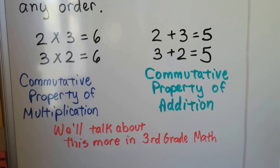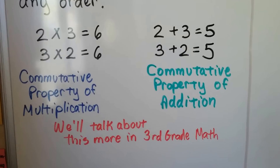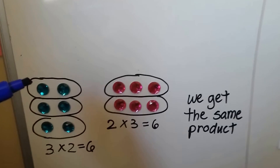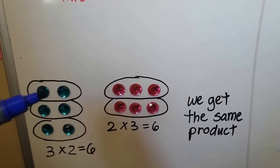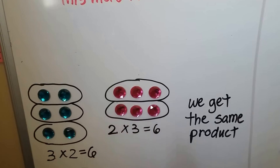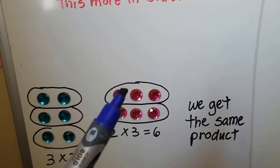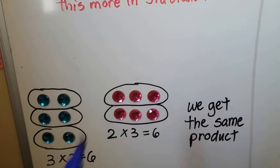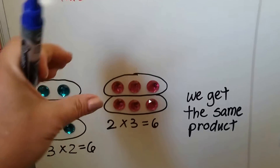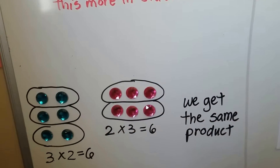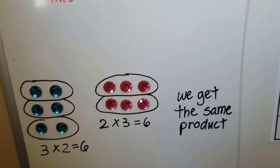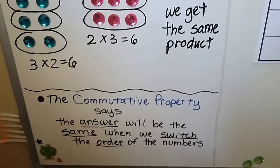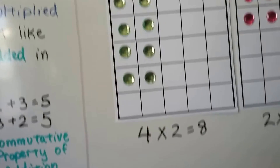I'm going to talk more about this in third grade math, so don't worry too much about it — I just wanted to show it to you. What it's saying is we can have 3 groups that have 2 in each group, and that's going to equal 6. Or we could have 2 groups that have 3 in each group. It's almost like we took this one and turned it sideways so that it looked like this. We're going to get the same product. The commutative property says the answer will be the same when we switch the order of the numbers.